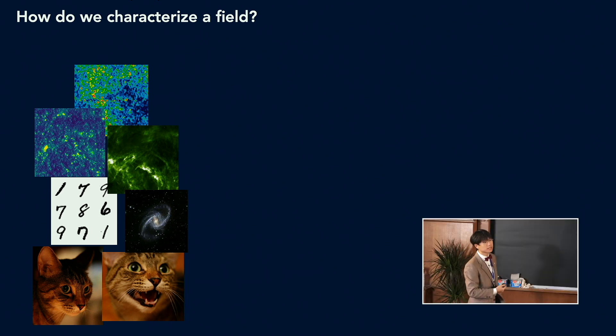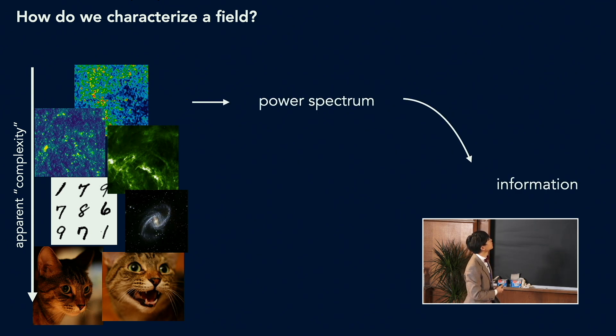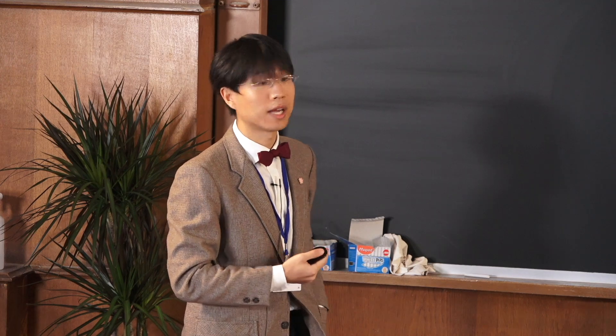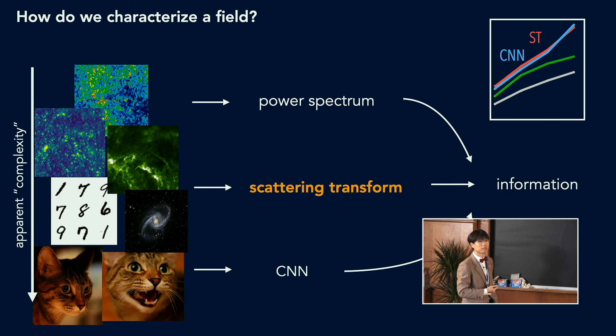So let me summarize. I talked about different ways to characterize the field and to extract information from it. There is the power spectrum and traditional statistical approach, and there's a convolutional neural net approach. And I talked about a new tool, which is called scattering transform, which lies in between of these two approaches. So on the one hand, it can be seen as a high-order statistic with lower-order non-linearity and a wavelength binning. That's why it becomes robust and efficient. And on the other hand, it can be seen as a toy model of convolutional neural net without the need to train.